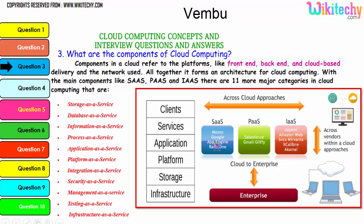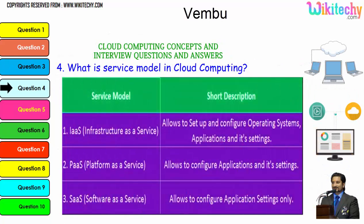For software as a service, typical examples are App Engine, Google, and Mezo. For platform as a service, examples are Gmail, Glyphi, and Salesforce. For infrastructure as a service, there are companies such as Amazon Web Services, Delvanix, Excalibur, Akamai, Joyent, and others. The question now is: what is the service model in cloud computing?